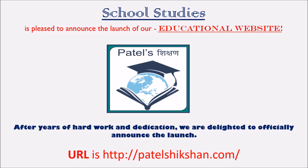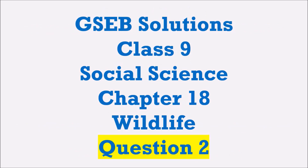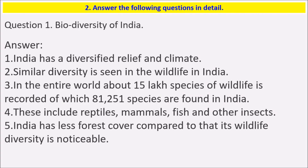Today we will see a video related to GSB Solution Class 9 Social Science Chapter 18: Climate, Question 1. Let's solve the textbook exercise. The first question is: give a list of geographic regions of India with reference to the similarities in the categories and their existence in the region. The wildlife of India